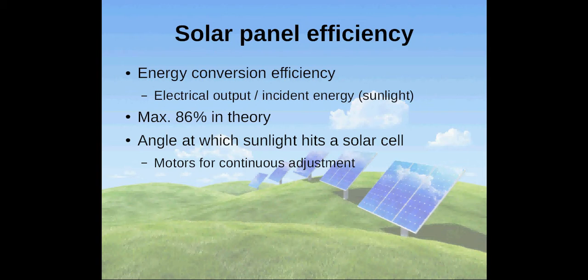The maximum theoretically possible conversion efficiency for sunlight is 86%. The actual energy conversion efficiency of a solar panel depends on many different factors.